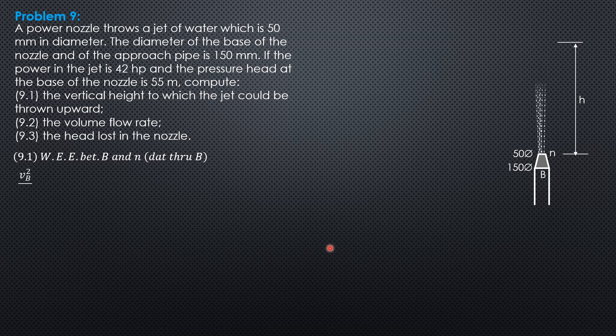So velocity head at b plus pressure head at b plus elevation head at b equals velocity head at n plus pressure head at n plus elevation head at n plus head loss between b and n. The head loss between b and n is also the head loss in the nozzle.